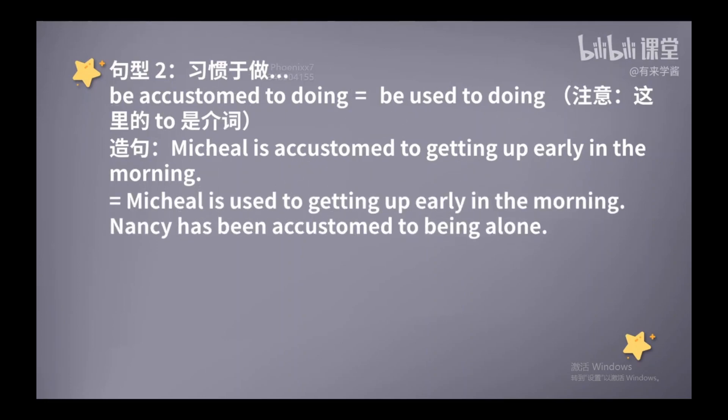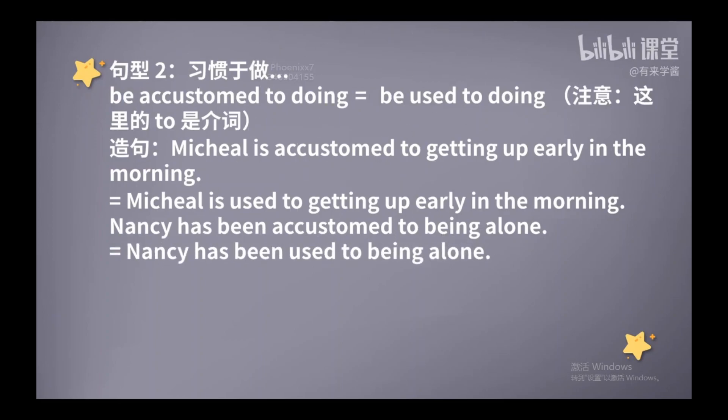好，我们再来造个句子。你有个朋友叫Nancy，她一直一个人生活，而她早已习惯了独处。用英文我们就可以这样来表达：Nancy has been accustomed to being alone. 注意后面不是to be alone，而是to being alone，因为这里的to它是一个介词。你也可以说：Nancy has been used to being alone.